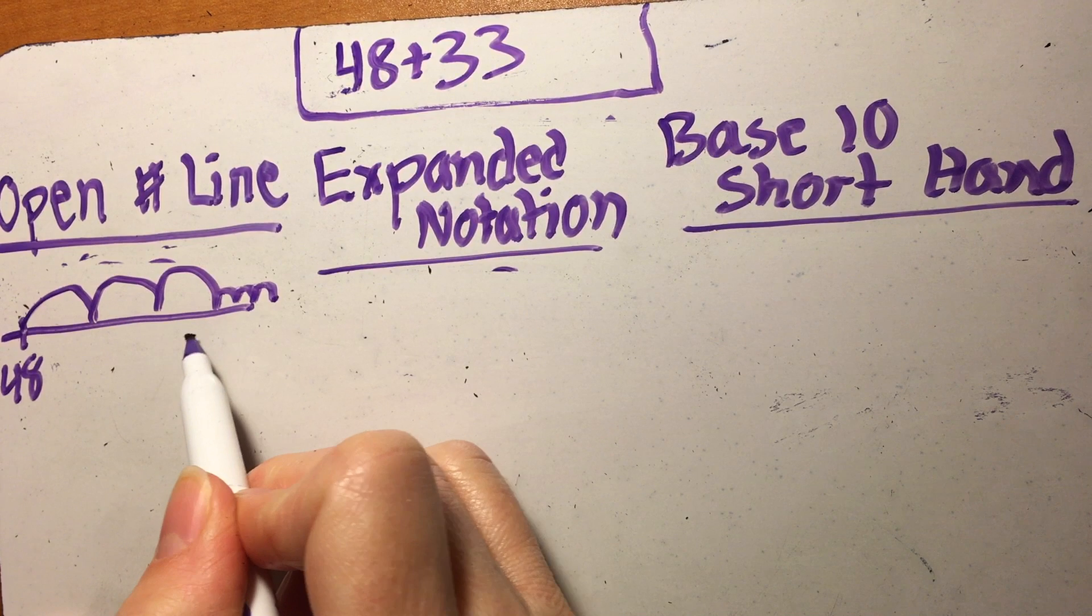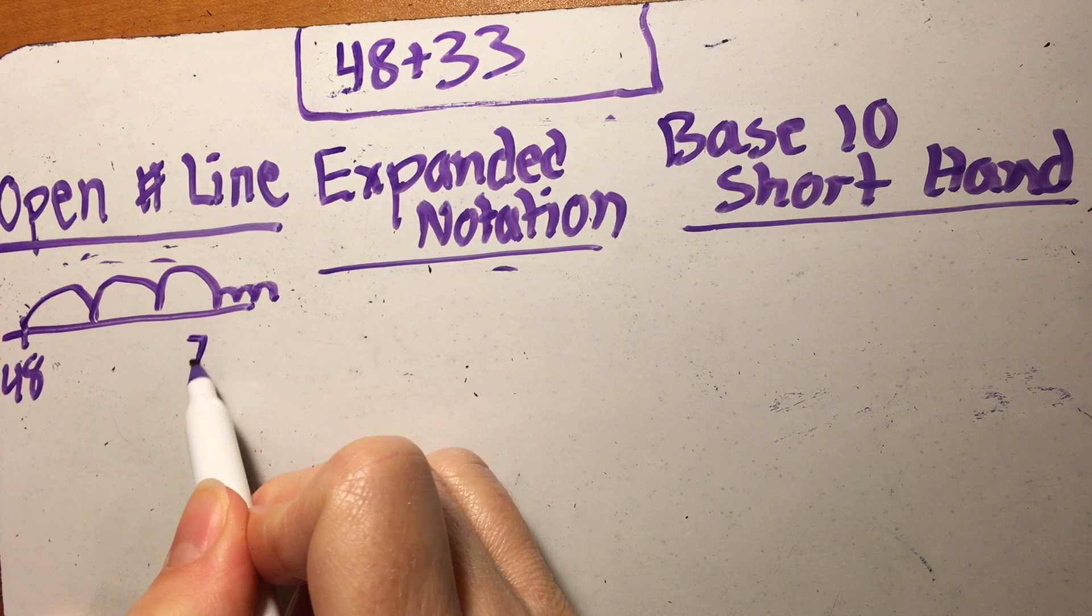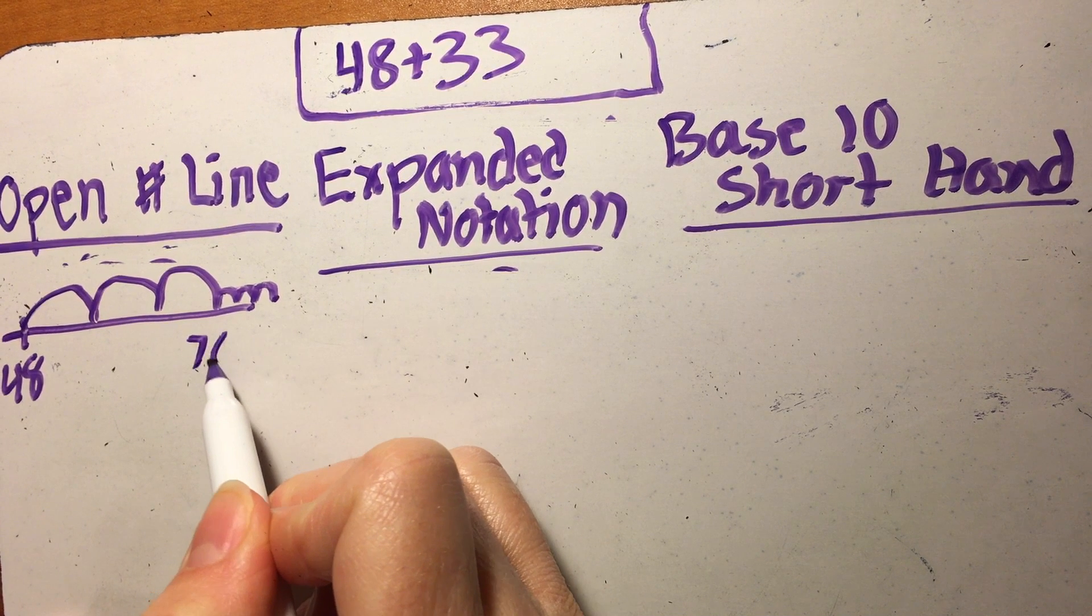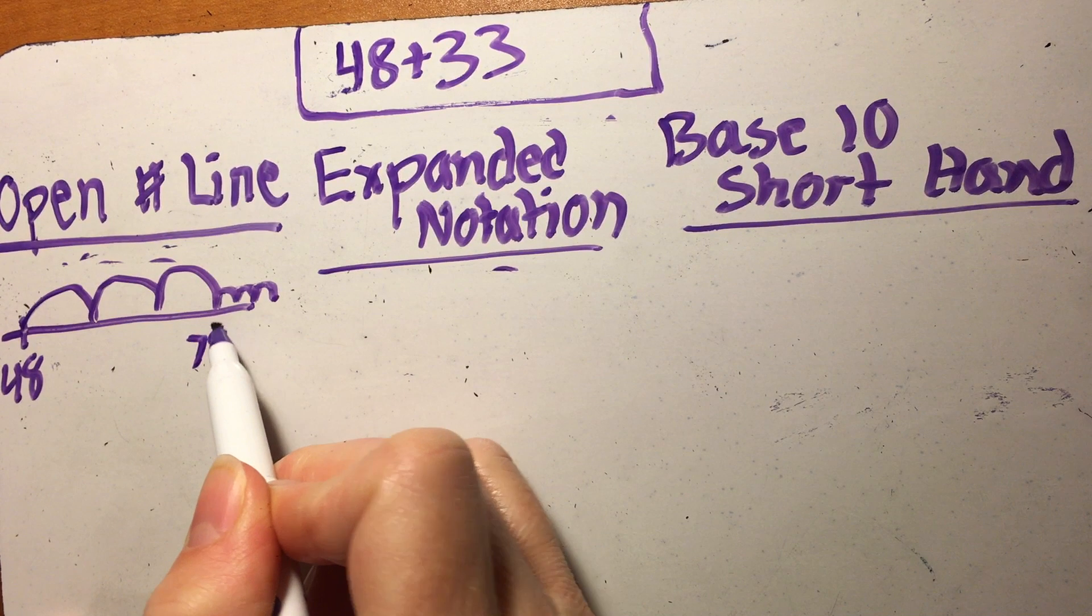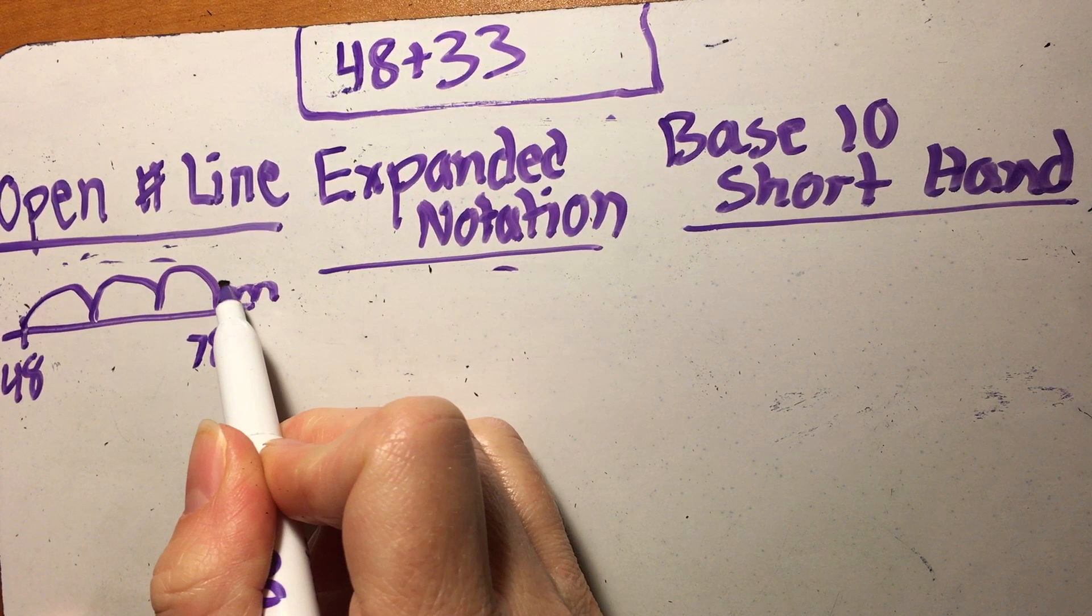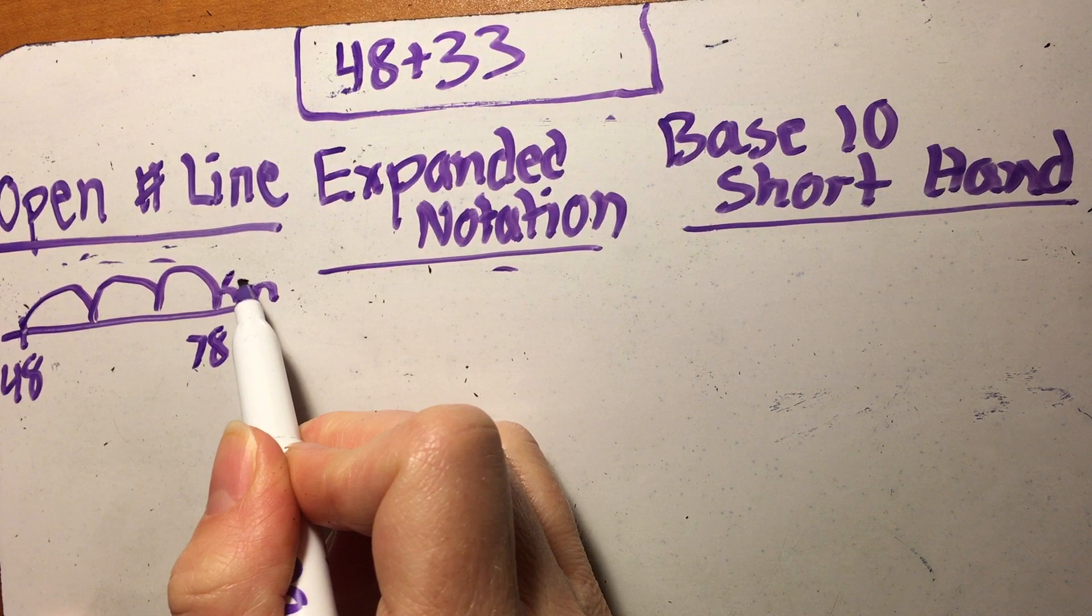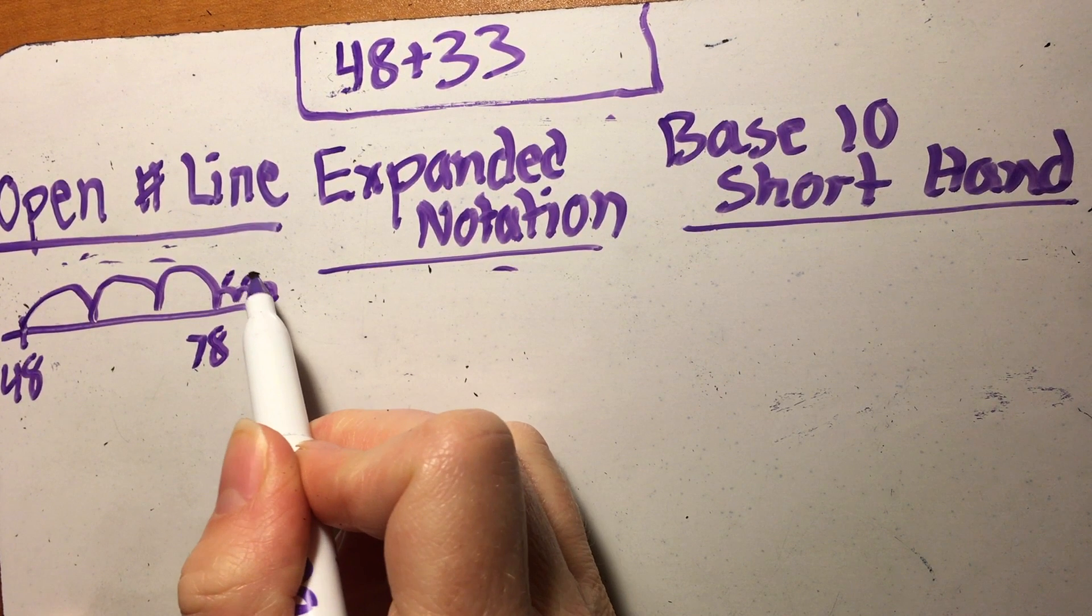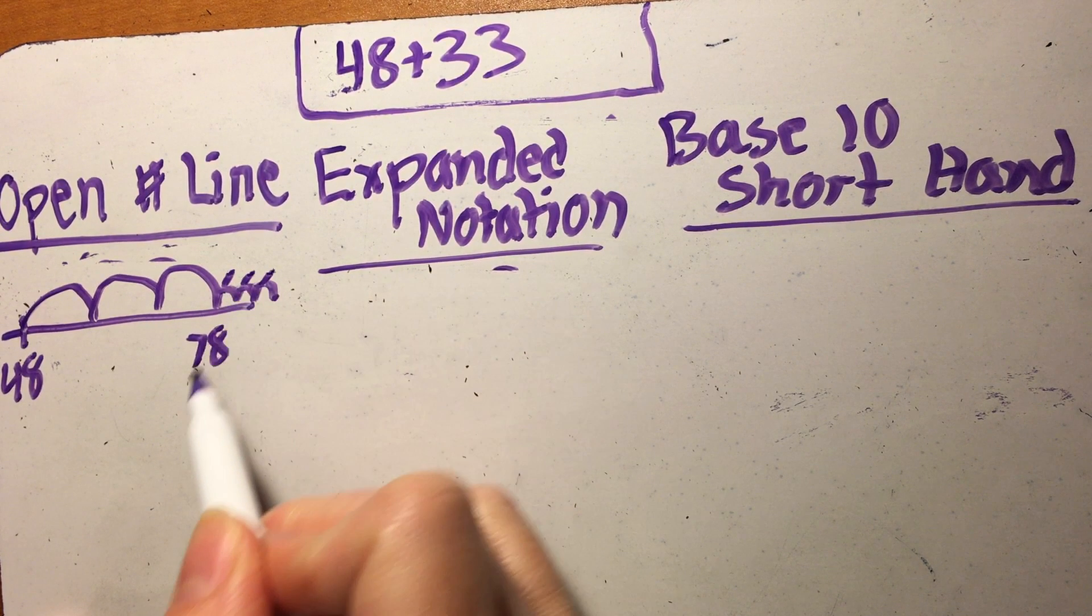So 48 plus 10 is 58 and 68, and then that last hump is 78. And in our classroom I tell them to write that down just because I like to see their thinking in case there's a breakdown and what may have gone wrong. By the way, we celebrate mistakes because we kind of learn more about our thinking and how numbers work. So adding the 30 got you to 78, and then we add by one so 78, 79, and then 80, and then that last hump will be 81.